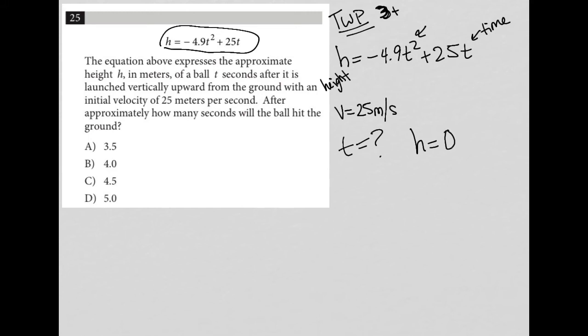And that's really the key to answering this question. Because now I can just rewrite the equation as zero equals negative 4.9 T squared plus 25 T. And I can do some factoring here. So zero equals T, parentheses,